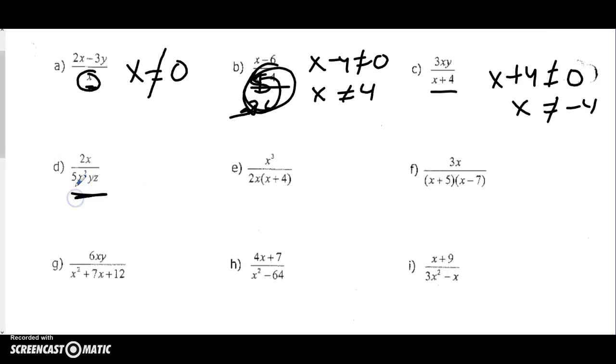If you have something like 5 times X squared times Y times Z, this can't be zero. This could be zero if X was zero, so X can't be zero. This could be zero if Y is zero, so my denominator would be zero. Same with Z. If I have numerous factors with the same variable, I might have a couple of restrictions for the same thing.